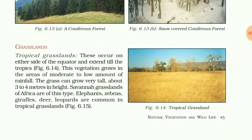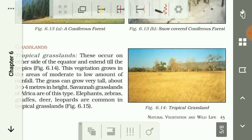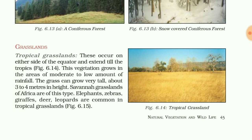Tropical grasslands occur on either side of the equator and extend till the tropics. This vegetation grows in areas of moderate to low rainfall, and the grass can be about 3 to 4 meters in height. The Savanna grasslands of Africa are an example. Elephant, zebra, giraffe, deer, and leopard are all found in tropical grasslands.